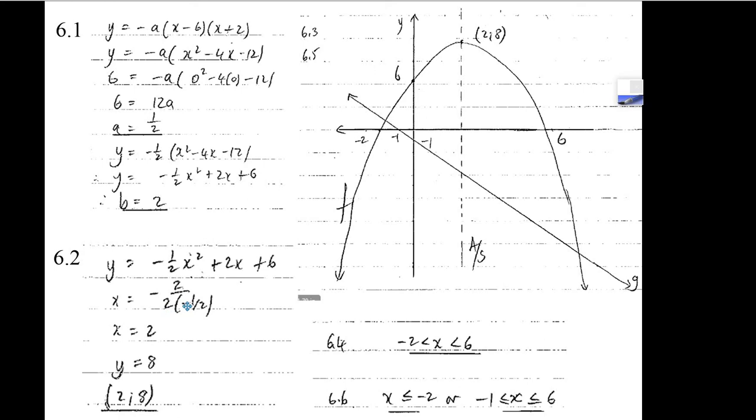Those 2s cancel. Minus 1 half, you flip and times. Those 2 negatives make a positive. You get x equals 2, and that's the x-coordinate of the turning point.